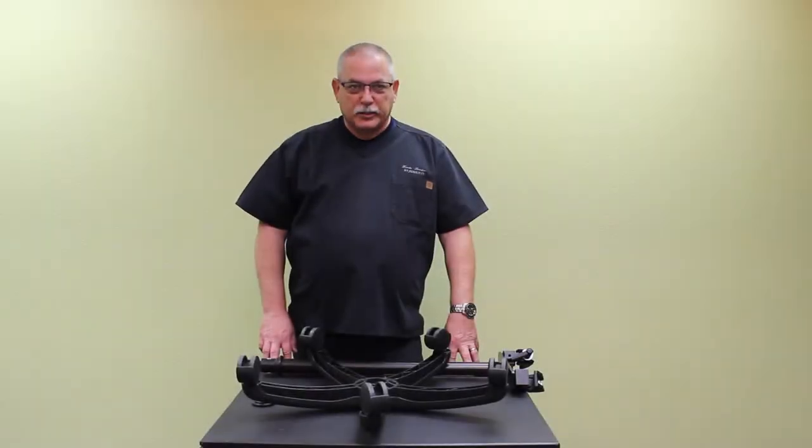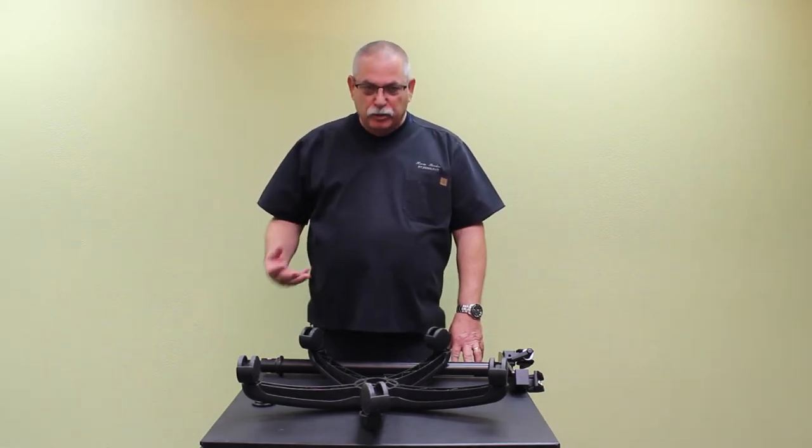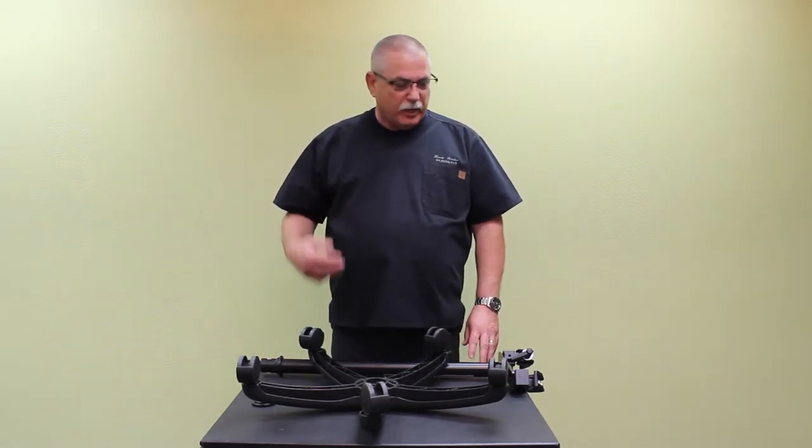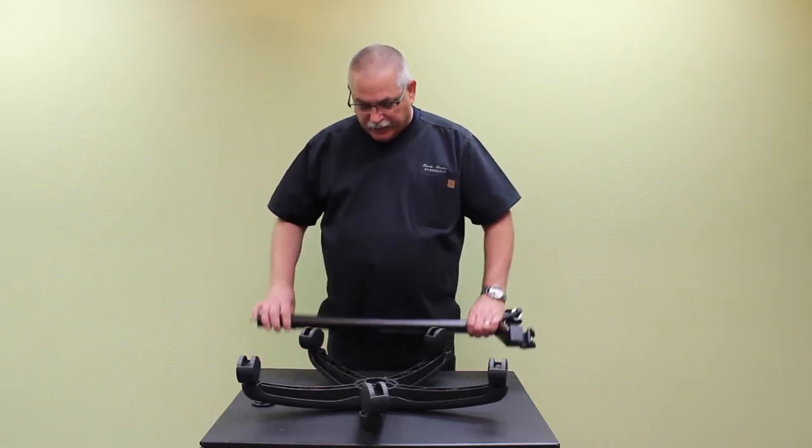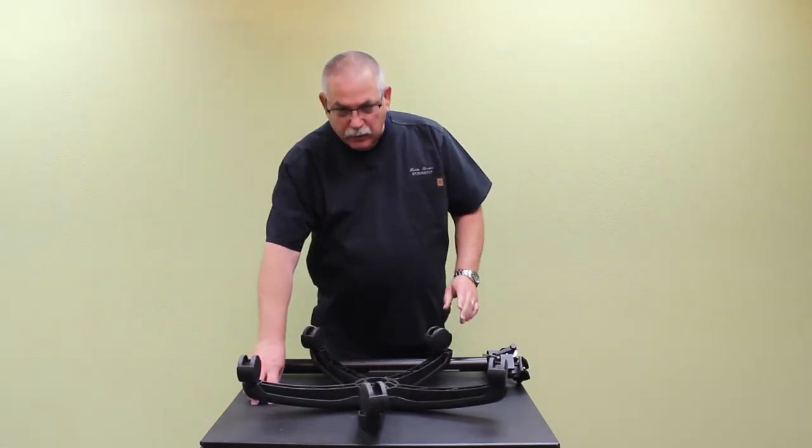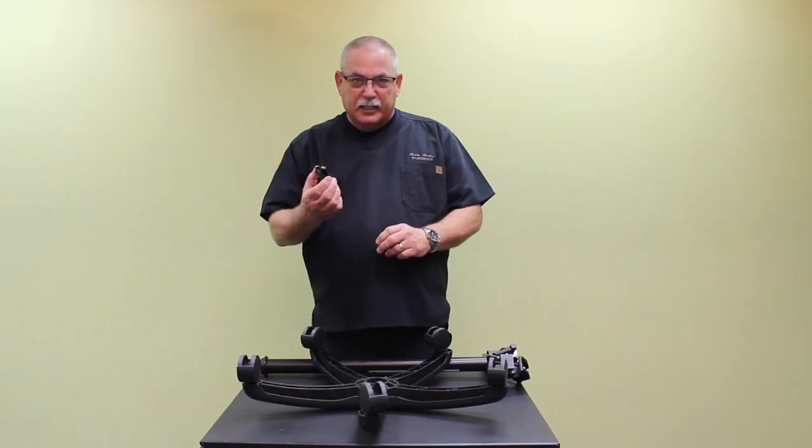So the first thing we're going to want to do is assemble the transportation stand. As you unpacked, you should have four components to the transportation stand. There's the pole that has the threaded stud on the end, the rolling base, what we call a locating washer, and a locking knob.